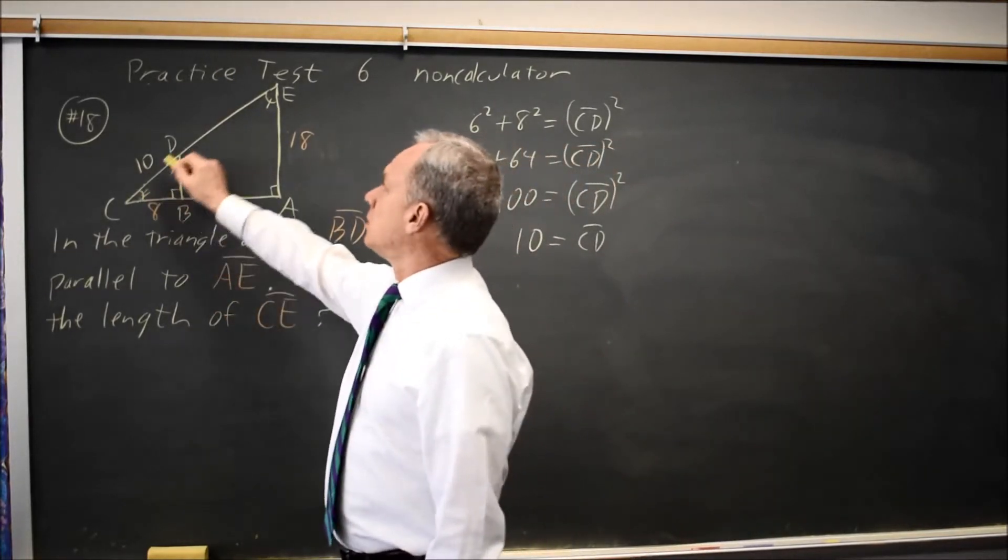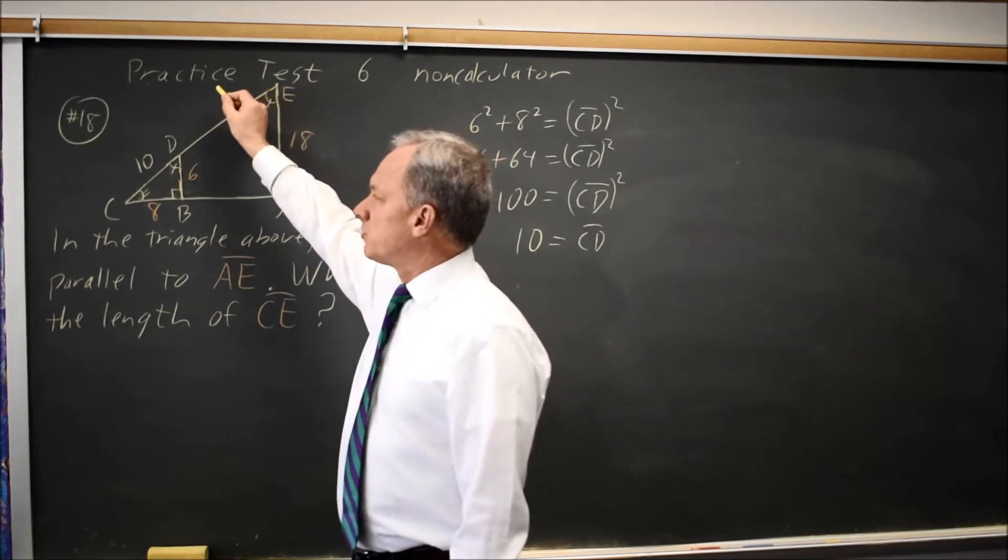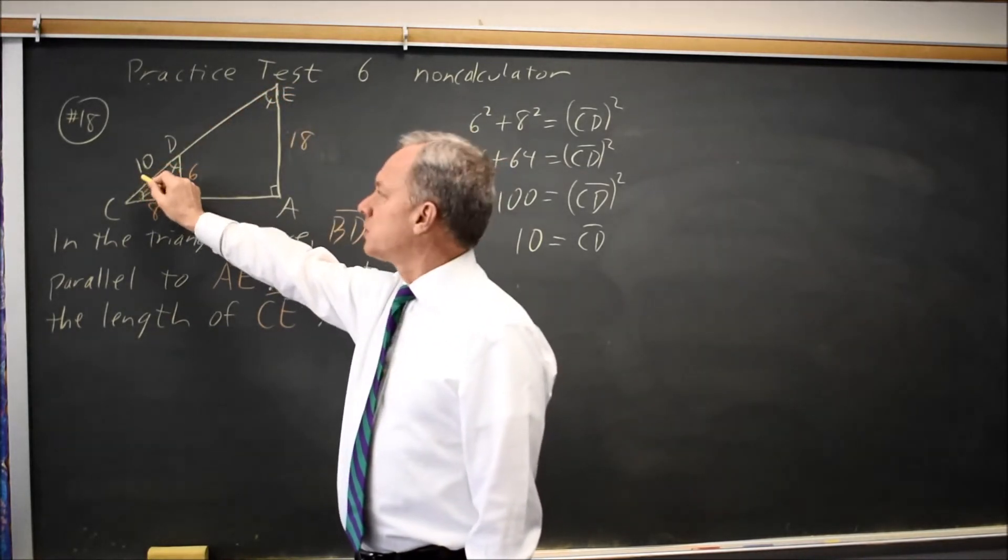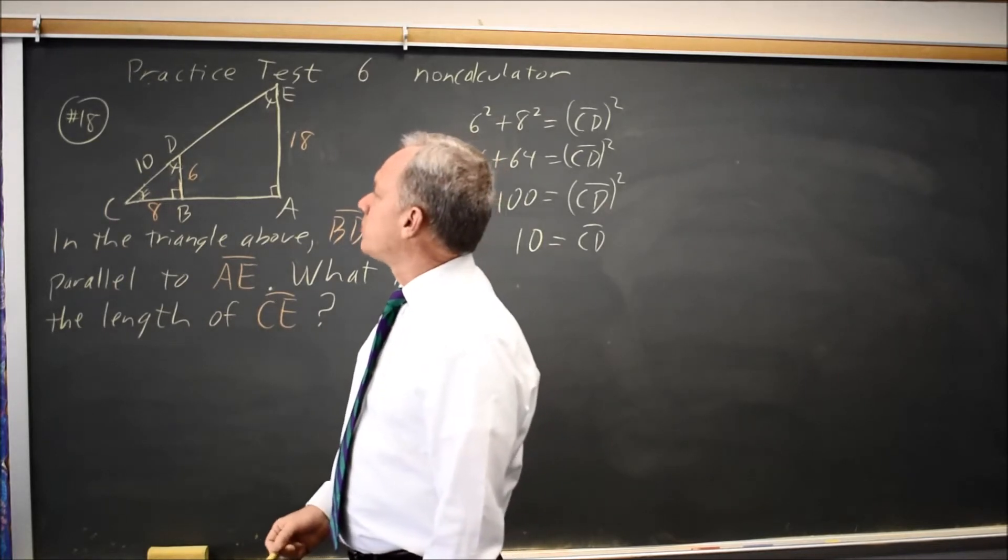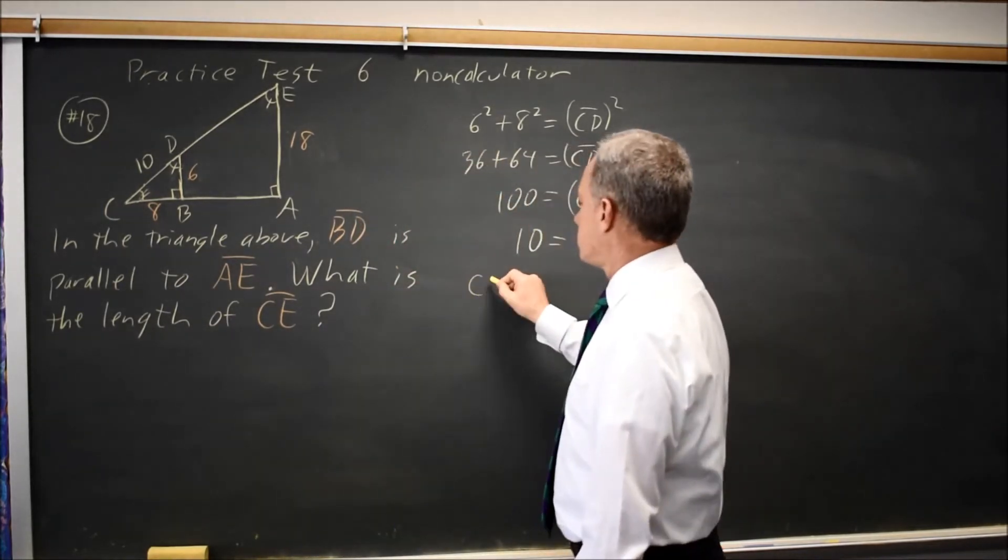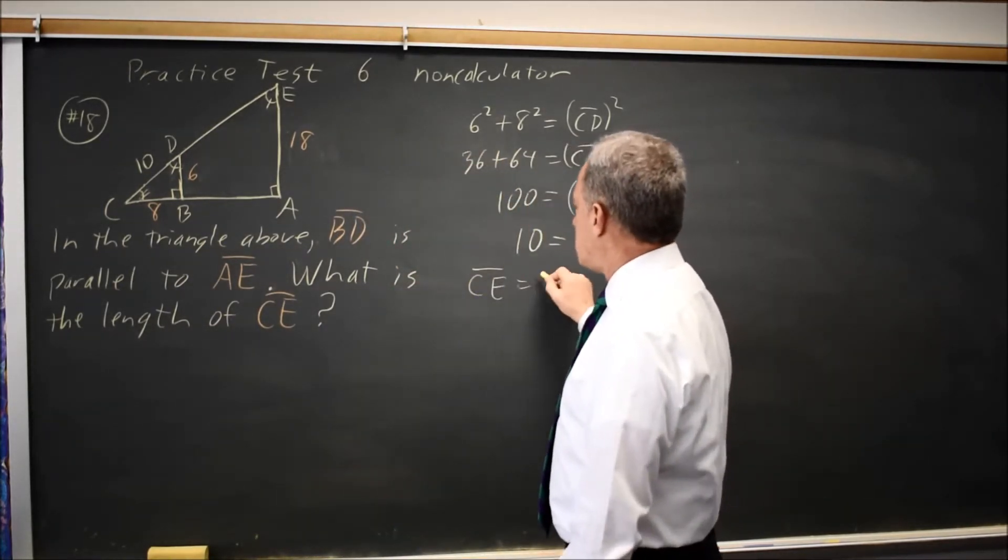Since the hypotenuse of the large triangle is in ratio of 3 to 1 to the small triangle, the hypotenuse CE will have length 30.